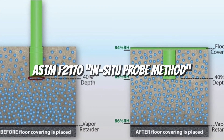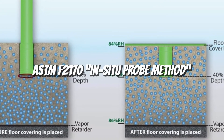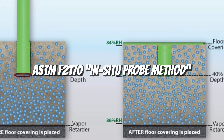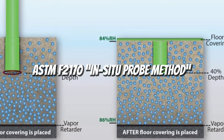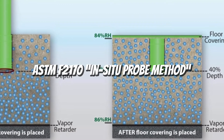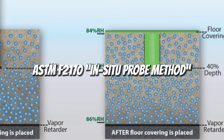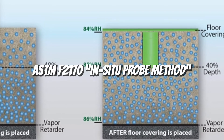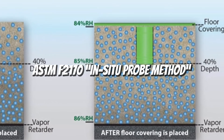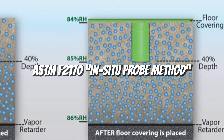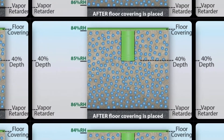ASTM F2170: determining relative humidity in concrete floor slabs using in-situ probes. In this test, a sleeve or a probe are inserted into holes drilled into the concrete. The test is more precise because it can show humidity readings at various depths in concrete. Probes can also be left in the concrete to deliver readings over time.